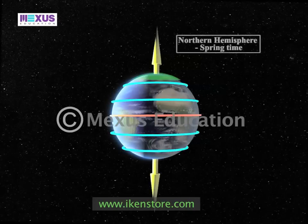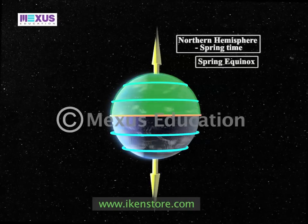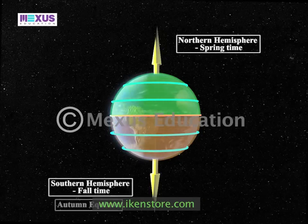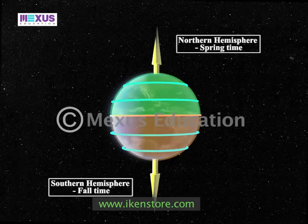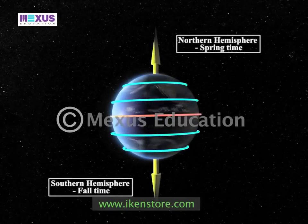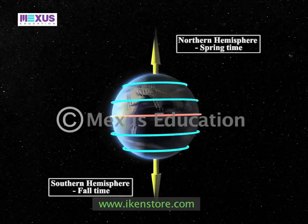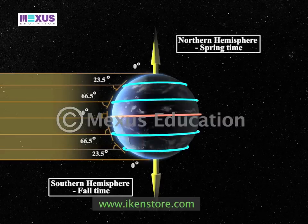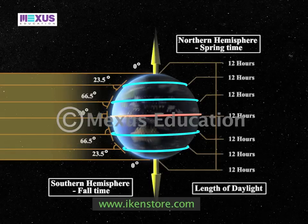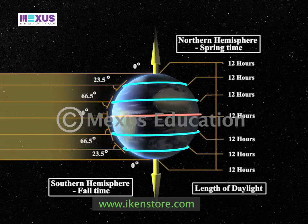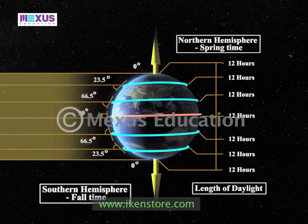During this time, the northern hemisphere is in the spring equinox and the southern pole is in the autumn equinox, implying spring time in the northern hemisphere and fall time in the southern hemisphere. The angle of the sun's rays slowly decreases towards the pole, resulting in the hours of day and night being equal in all places of the earth, with the northern and southern hemispheres receiving an equal amount of sunlight.